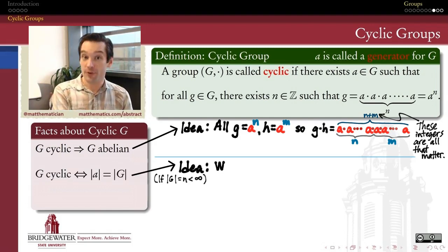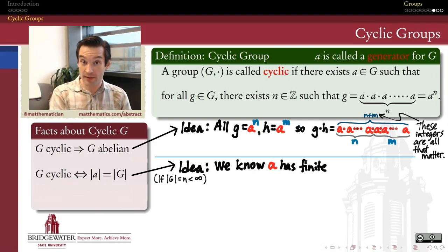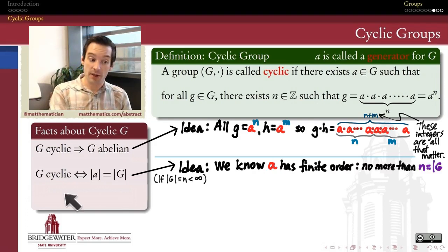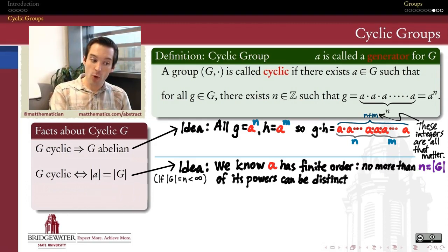Fact number two is that if G is a cyclic group, then the order of the group is the same as the order of its generator. So if G is a cyclic group generated by A, and that order is finite, then the order of the group and the order of the generator are the same number. It takes exactly as many powers of A to make the identity for the first time as there are elements in the group G.